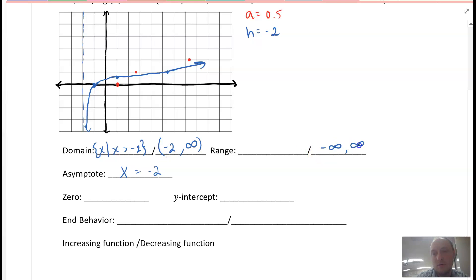Range - all real values. Range is y values. Our zero - in the last video I had to give that to you. In this one you can tell your zero here is at negative 1.